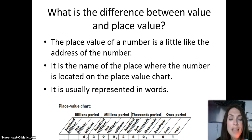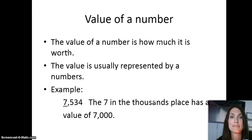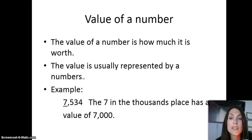Continuing across the place value chart: millions, ten millions, hundred millions, and billions. The value of a number is how much it's worth, and it's usually represented by numbers. So if we look at the example 7,534, you'll notice that the 7 is underlined. The 7 is in the thousands place and has a value of 7,000.